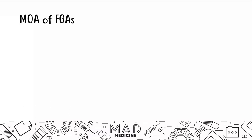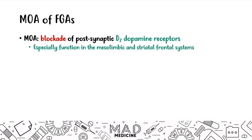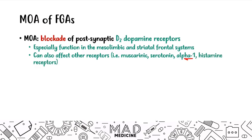When it comes to the mechanism of action of first-gen antipsychotics, you are blocking the post-synaptic D2 dopamine receptors. These D2 receptors function especially in the mesolimbic and striatal frontal systems. First-gen drugs can also affect other receptors — muscarinic, serotonin, alpha-1, and histamine receptors — so it's not exclusively D2, even though D2 is the main target.